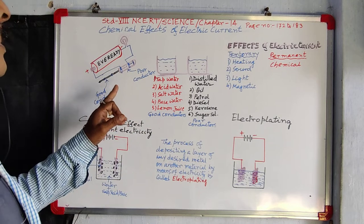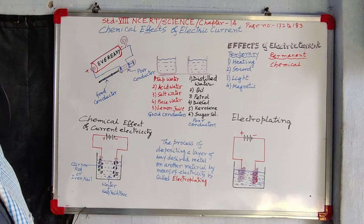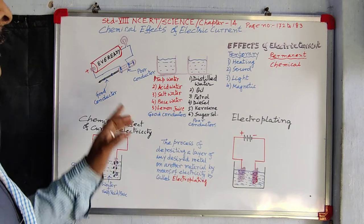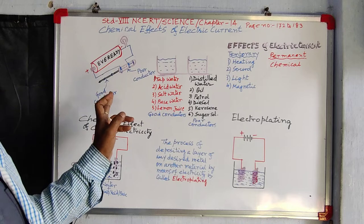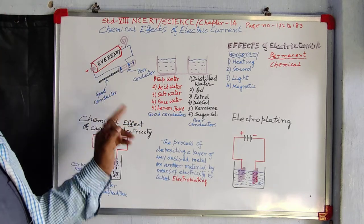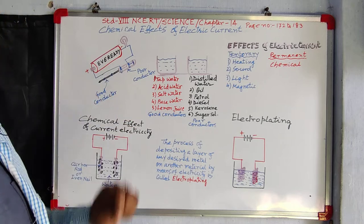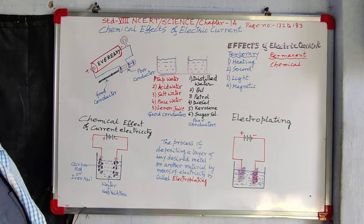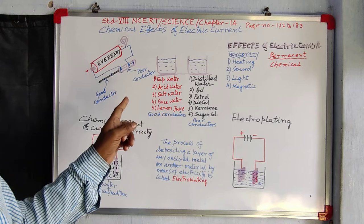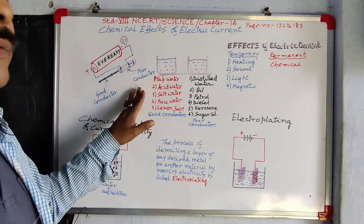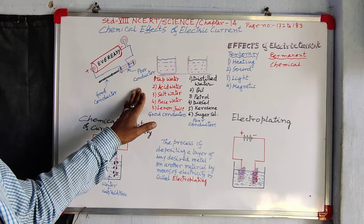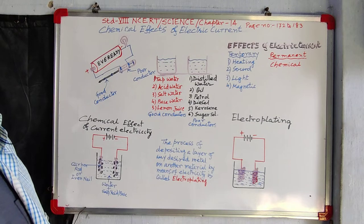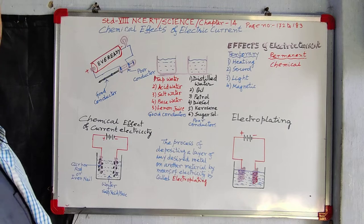So what we can conclude is that all materials do not allow electricity to pass through them. Metals normally allow electricity to pass through, so they are all good conductors. Non-metals — plastics, rubber, paper — are poor conductors; they do not allow electricity to pass through. These are all solid substances. What about liquid substances? Do liquid substances allow electricity or not? Let us do some experiments.